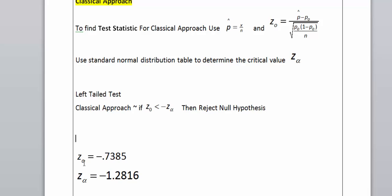Okay, so you can see I have my test statistic and my critical value, and I want to test to see if my z-naught is less than my critical value. So you can see that this is not true.